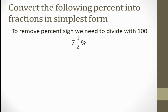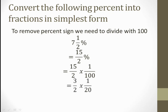Our question is 7 whole number 1 upon 2, and a percent sign is there. To remove this percent sign, I will divide by 100. First I will convert it into improper fraction: 7 gives 14 plus 1, so 15 upon 2 percent. Now 15 upon 2 multiplied with 1 over 100. 15 and 100 can both be cancelled with 5, leaving 3 and 20. So 3 multiplied by 1, and 2 multiplied by 20, giving 3 over 40. This is how we write percent into fraction.